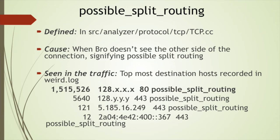The second most triggered weird is possible_split_routing, defined in the TCP protocol analyzer, TCP.cc. The cause of split routing is when Bro is not able to see one part of a connection - since a connection has two parts, client-to-server and server-to-client, if Bro only sees the client-to-server side it raises the condition that it might be split routing. This alert is good to have if you actually have split routing so you can safely ignore it, but it's not good when you don't have split routing and are still getting it.